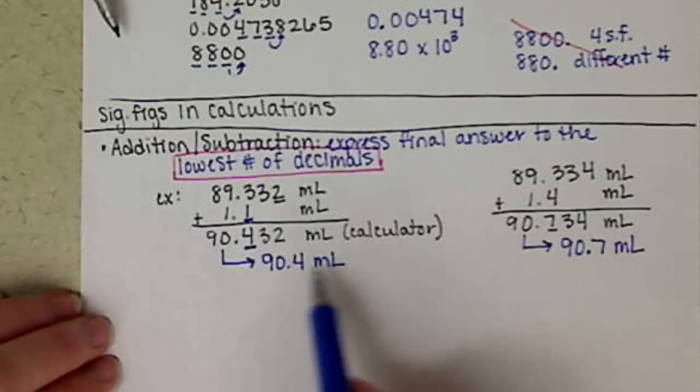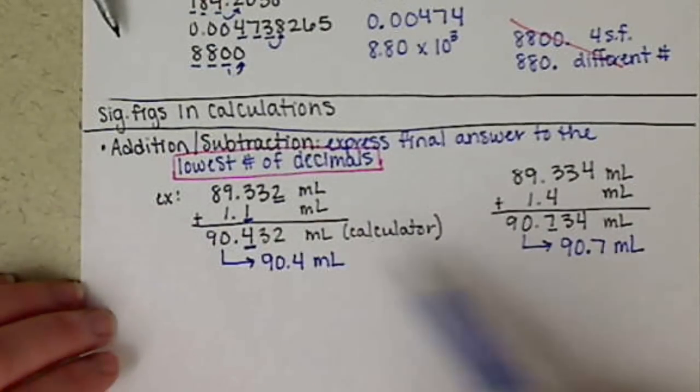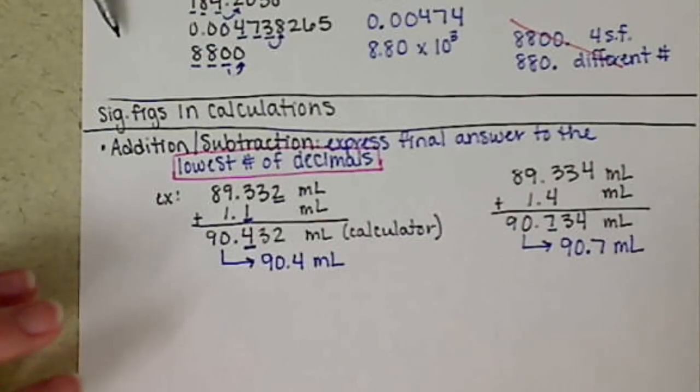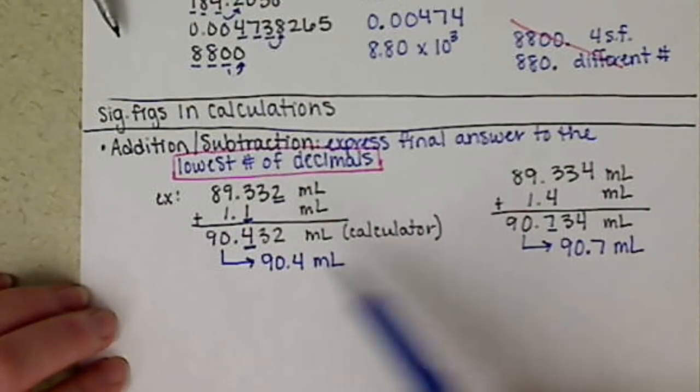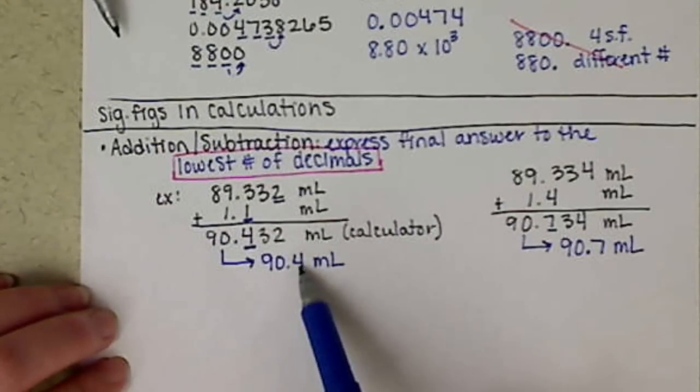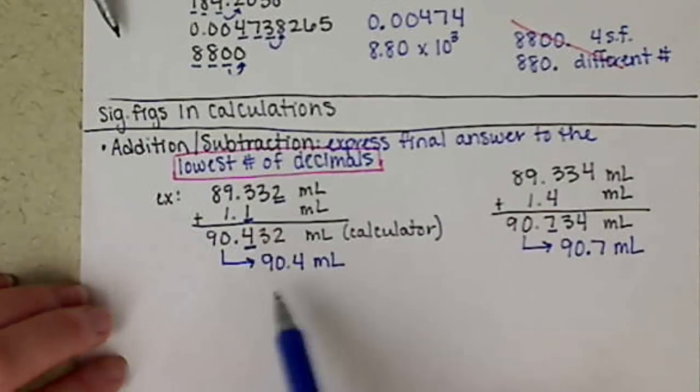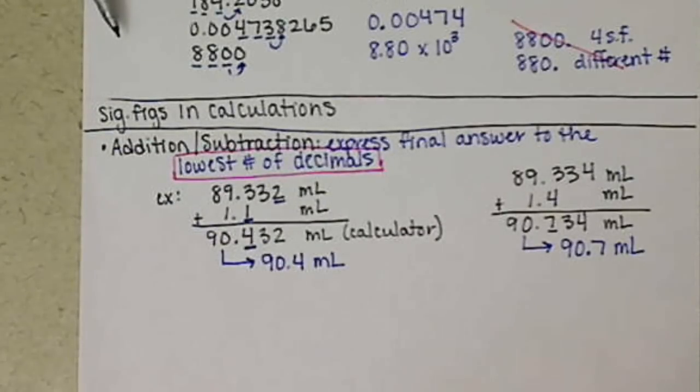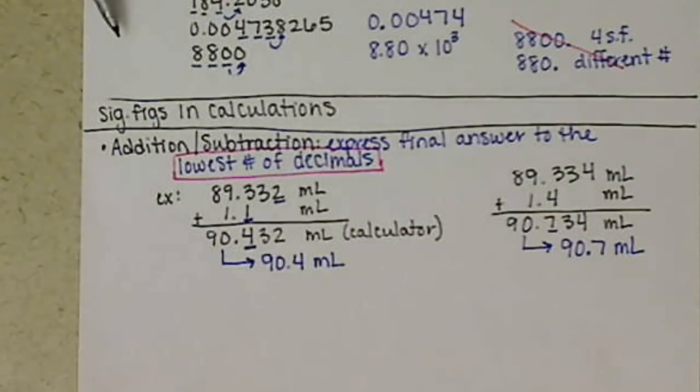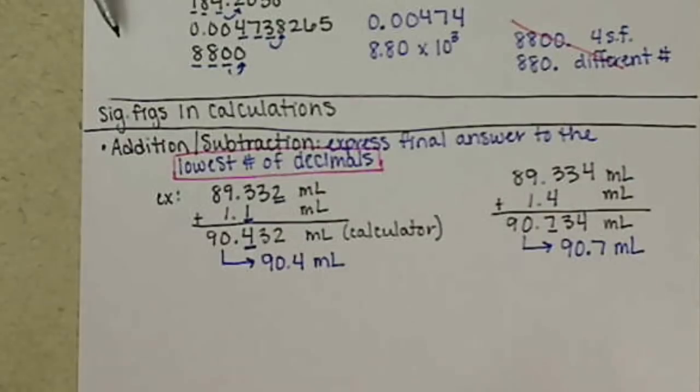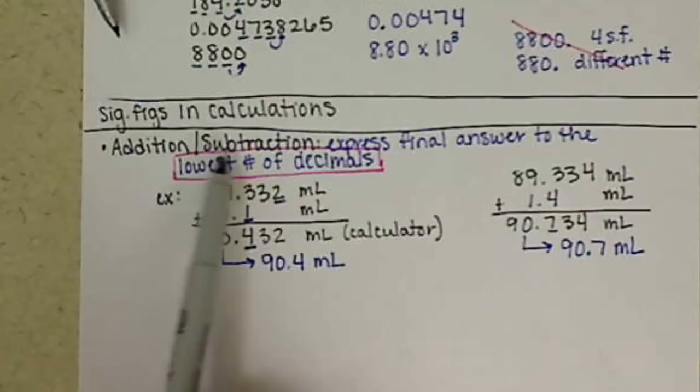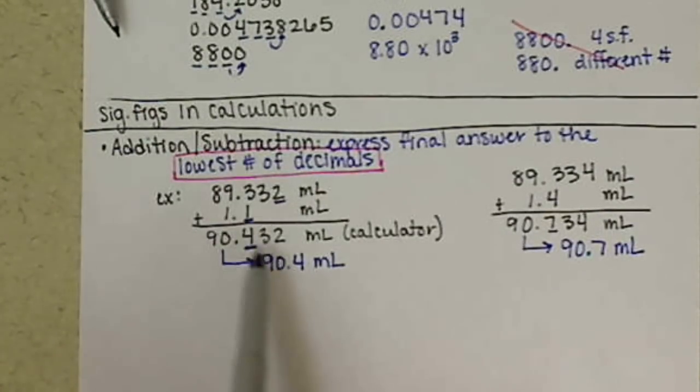Now, mathematically, these are two different numbers. Obviously, there's a 4 there and there's a 7 there. However, scientifically, these are the same values. We can allow for some variance in these last digits. So, as long as it's the last digit that are varying from each other, we consider those the same measurement. Alright. So, those are our rules for addition and subtraction. Subtraction works the same exact way. You cut off your number to the lowest number of decimals.